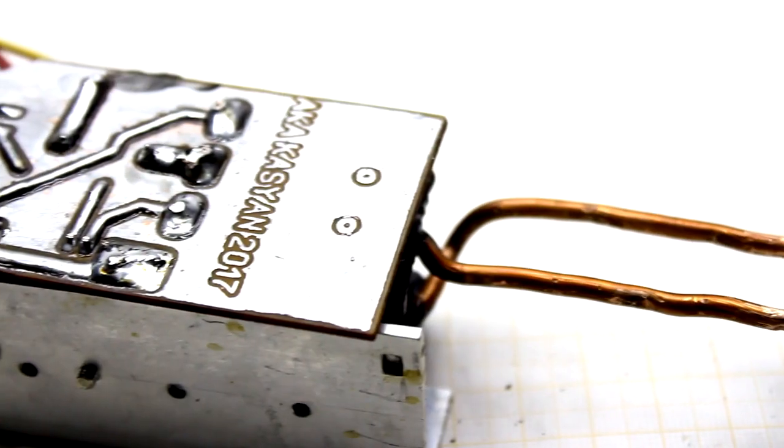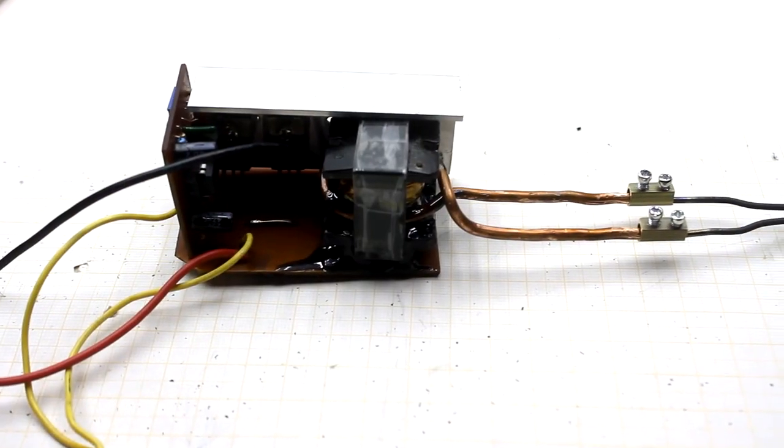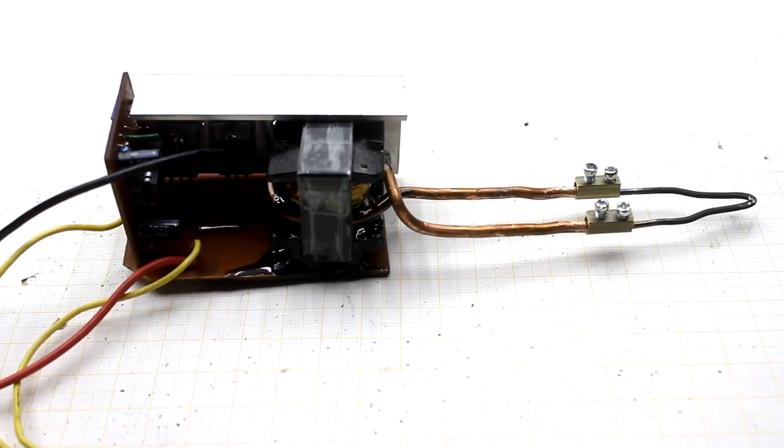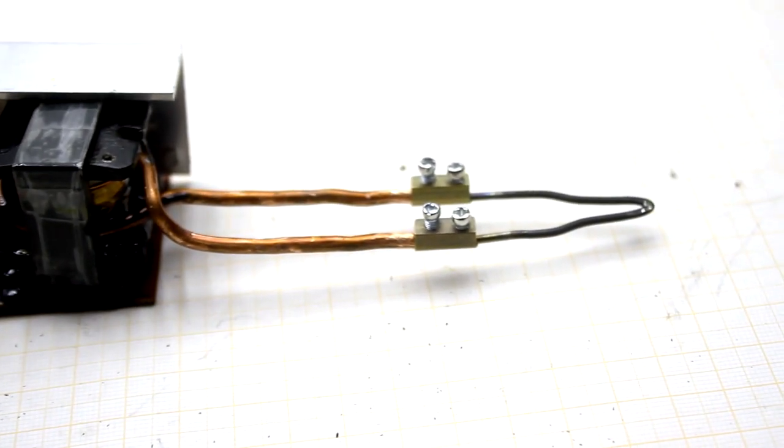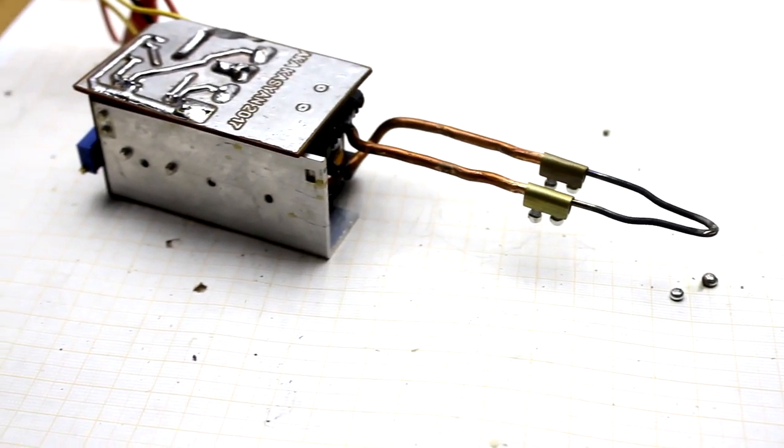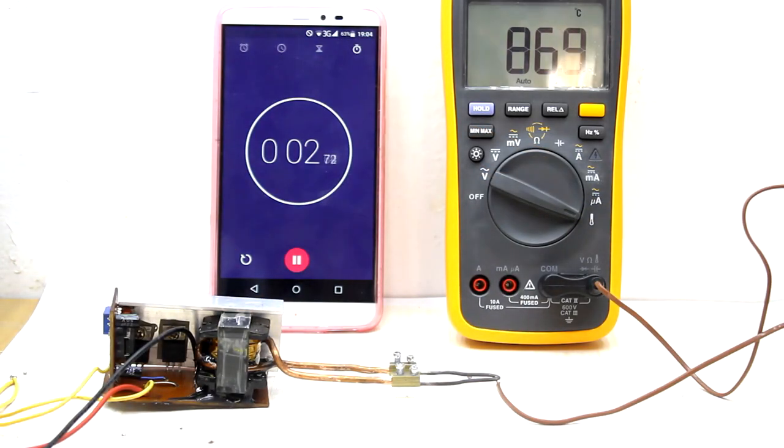First, now there are no soldering irons of this type, so it's impossible to buy such a device as they simply aren't on sale. Secondly, it is completely autonomous and is powered by built-in batteries. Third, such a soldering iron heats up in literally a couple of seconds. And finally, fourth, it has a temperature adjustment function.